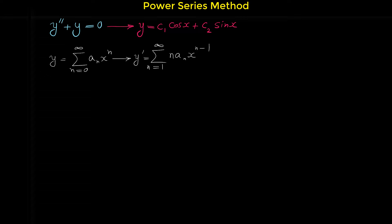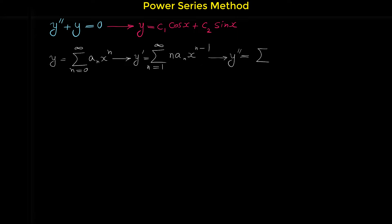When you take the derivative of this power series, because the first term is a constant, its derivative is 0, so we start y prime with n from 1. Now taking another derivative to find y double prime: y double prime equals sigma n from 2 to infinity of n times n minus 1 times aₙ x to the n minus 2. You can get this using the power rule.